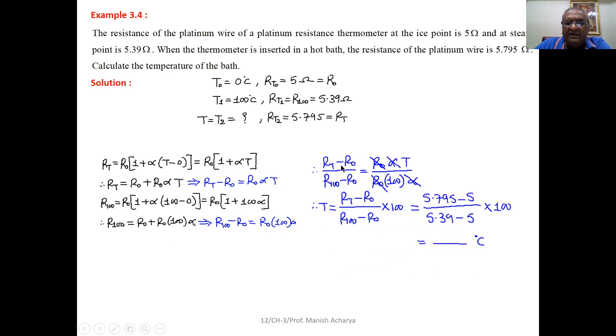Now take ratio of these two equations. So RT minus R0 upon R100 minus R0 equal to R0 alpha T upon R0 hundred alpha. R0, R0 cancelled. Alpha, alpha cancelled. Now take this 100 on other side. Make T as a subject of equation. So T equal to RT minus R0 upon R100 minus R0 into 100.